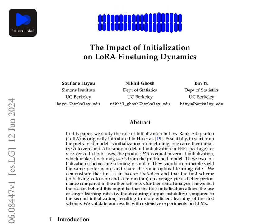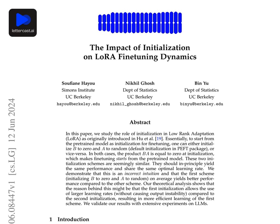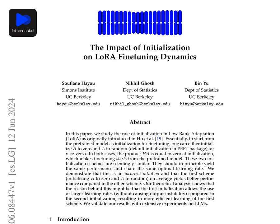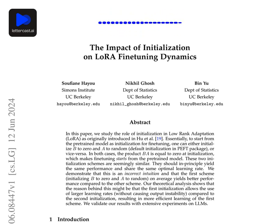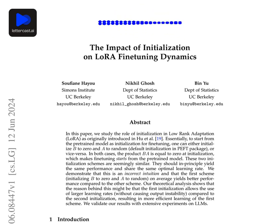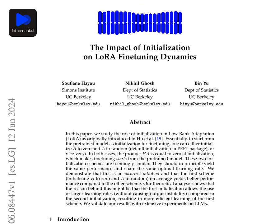Comparing INIT-A and INIT-B, what are the differences in terms of stability and feature learning efficiency? INIT-A allows larger learning rates, leading to better feature learning, but with some instability. INIT-B offers stability but limits feature learning due to under-training. The experiments with a teacher-student model showed that INIT-A supports larger learning rates and efficient feature learning, though with some instability, while INIT-B maintains stability but limits learning efficiency.